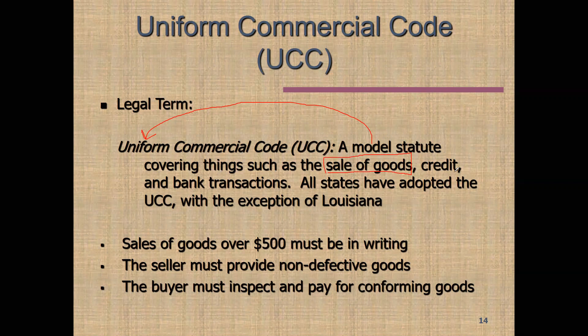The UCC covers things such as the sale of goods — the big one for us — credit, which is also important in hospitality, and bank transactions. All states have adopted the UCC with the exception of Louisiana, though even Louisiana has adopted parts of it. Some key highlights: a sale of goods over $500 must be reduced to writing. The writing requirement is modest — it can be emails or various formats — but you need some written record. When we say 'goods,' we mean tangible stuff you can touch, like paper clips or a loaf of bread.